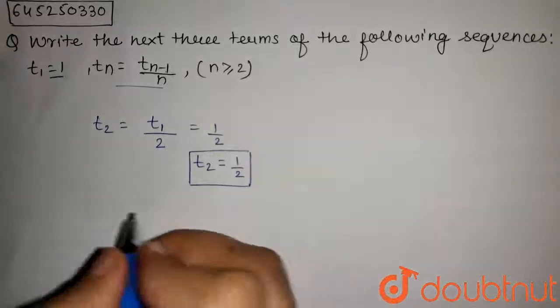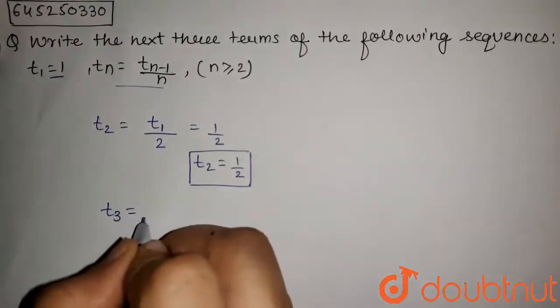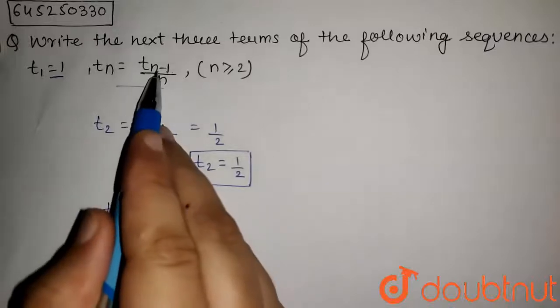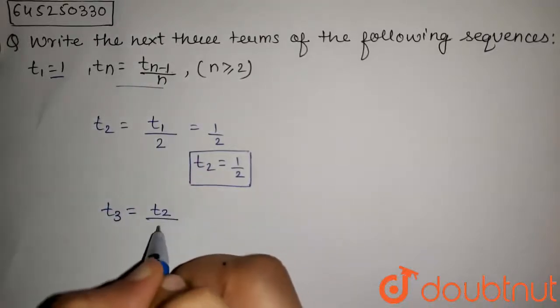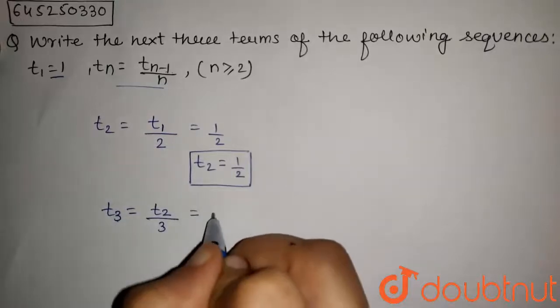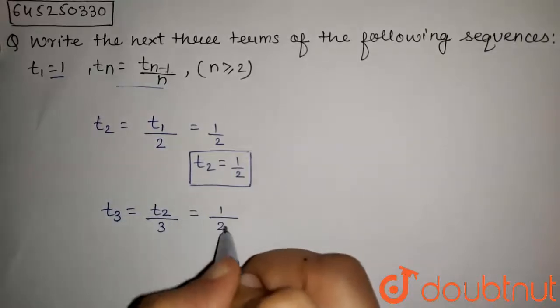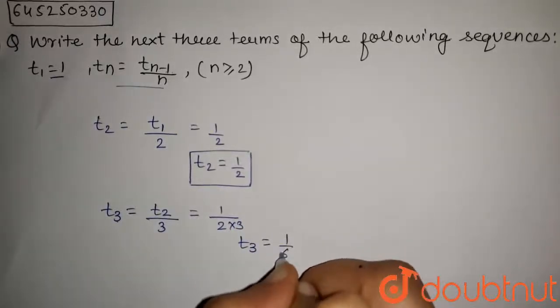Now the third term T3 will be equal to T3 minus 1, that is T2 upon n that is 3. So T2 by 3 is T3. So this will be 1 upon 2 into 3, which will be equal to, T3 will be equal to 1 by 6.